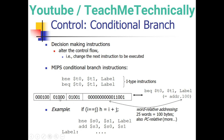The 16-bit offset for branch instructions is computed using the label address. For example, if the label is at address 100 bytes, we convert 100 bytes into words. Since one word equals 4 bytes, 100 bytes equals 25 words. We then convert 25 into binary and place that binary value in the 16-bit offset field. That is how we compute the 16-bit offset for branch instructions.